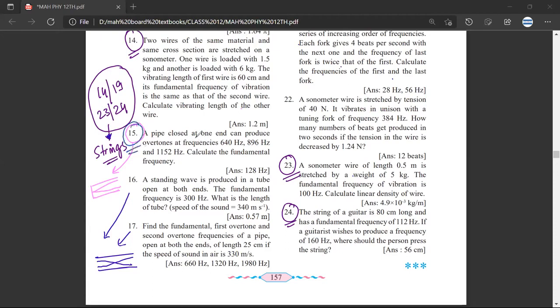Question number 15: A pipe closed at one end can produce overtones at frequency 640, 896, 1152 hertz. Calculate the fundamental frequency. Miss Madhu, how will you do it?